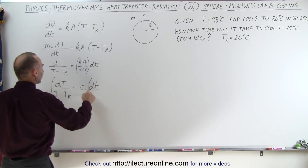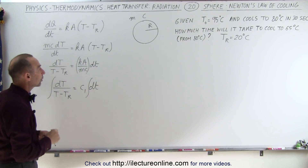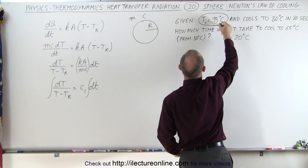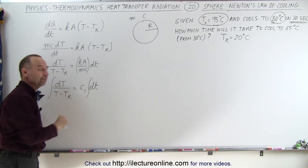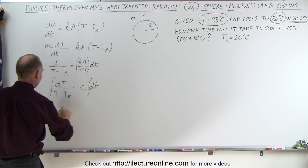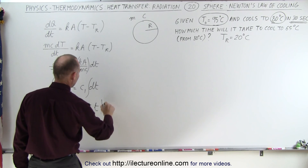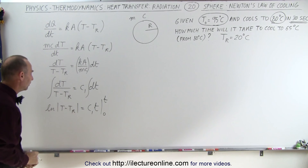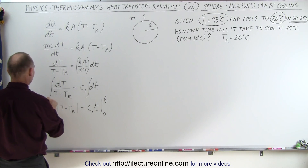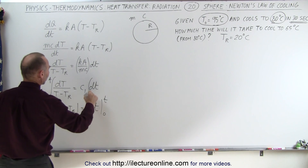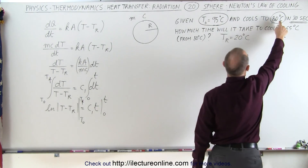Now we're able to integrate both sides. We need to find the value of C1, so we'll use the initial temperature of 95 degrees centigrade and the final temperature of 80 degrees centigrade with a known time of 30 seconds to solve for C1. Integrating the left side gives the natural log of T minus T of the room, and the right side gives C1 times time, integrating from 0 to T. We evaluate the left side from initial time to final time.